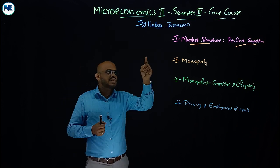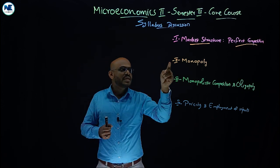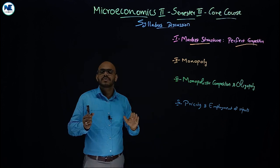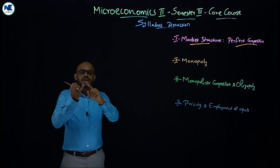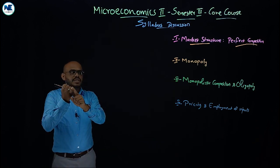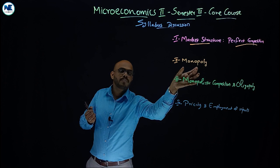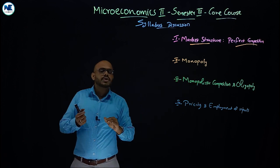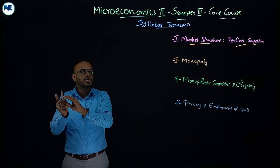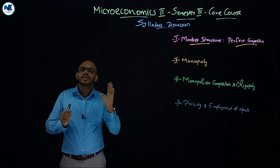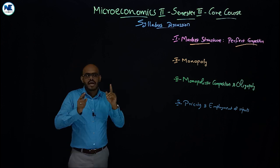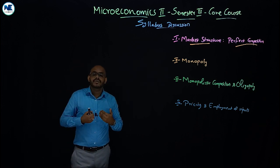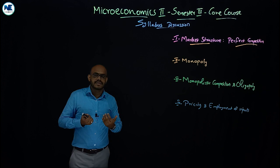The first, second, and third modules cover: perfect competition, then second module monopoly, third module monopolistic competition, and oligopoly. So these three chapters form the core, and we will try to cover each area thoroughly.